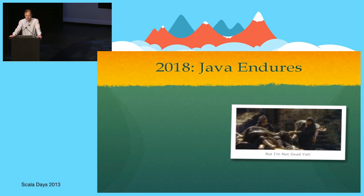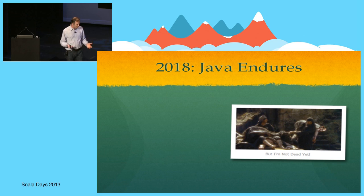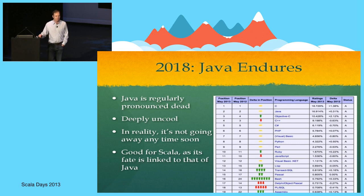However, Java is not going to go away any time soon. How many people have seen Monty Python's The Holy Grail? There's a scene at the time of plague where the guy is going around saying 'bring out your dead,' and this person is brought out saying 'I'm not dead yet.' Java is a bit like this. Java is regularly pronounced dead, it's obviously deeply uncool, but for some reason it just won't go away. If you look at the TIOBE Programming Language Popularity Survey — last month's data — Java is pretty much always up there roughly equal with C as the number one language.